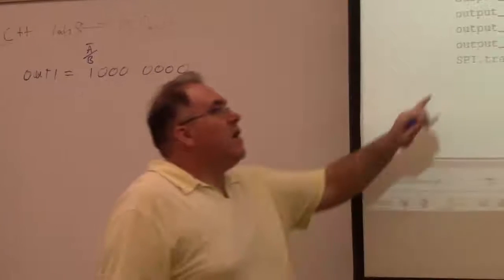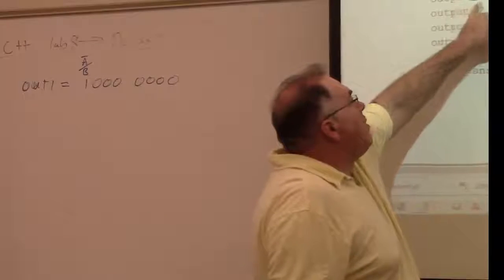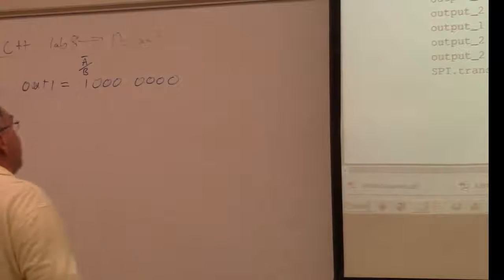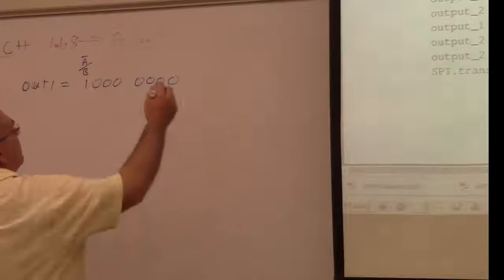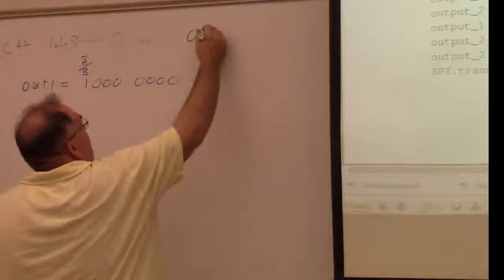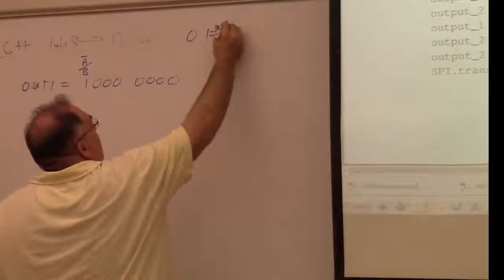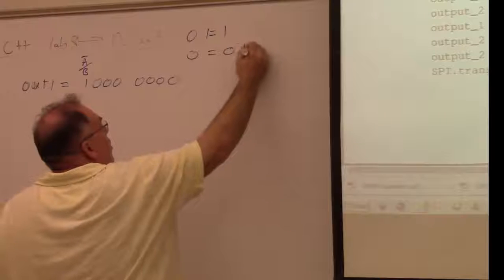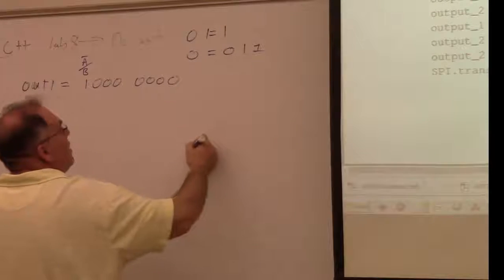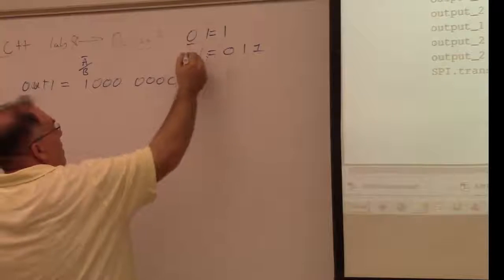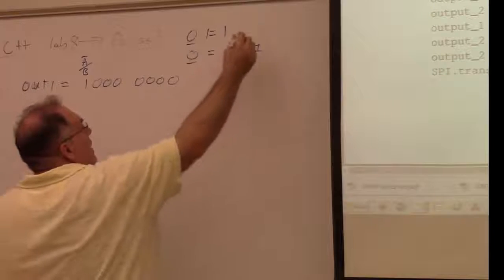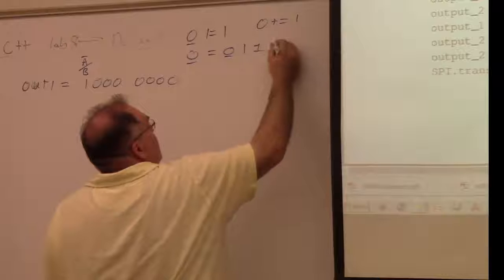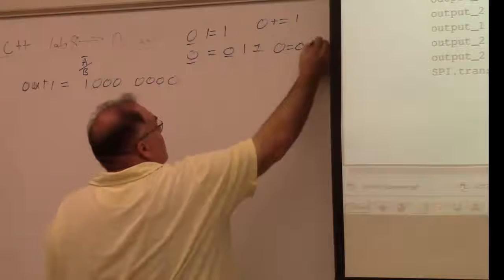And then the next thing says, or output one or equal 70. So what or equal means, if you say O or equals one, what that means is O equals O or with one. Right? Where this is just some variable O. It's like saying O plus equals one is the same as saying O equals O plus one. Where this is the number one.